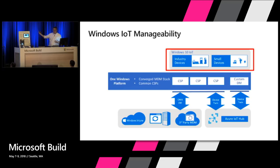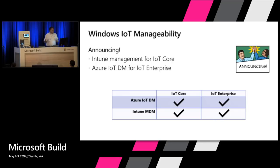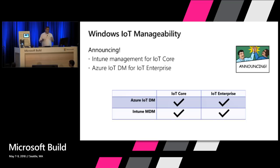Either way, it comes down to the same management layer on the system, and despite whichever Windows device you choose — small, medium, or large — it's all built on the same platform. Today, Azure Device Management works great on IoT Core and Intune works great on IoT Enterprise. We're announcing we're filling in the box: Intune Management is now available on IoT Core, and Azure Device Management will work on IoT Enterprise as well. Whichever size device or management preference you have, Windows will support you.